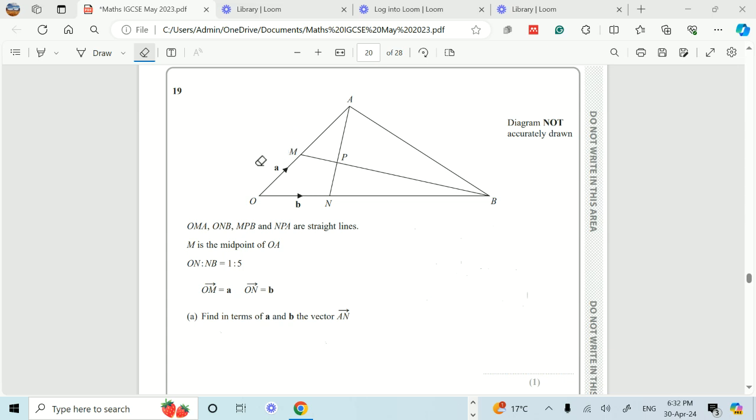OMA, ONB, MPB and NPI are straight lines. M is the midpoint of OA. ON to NB is equal to 1 to 5. If OM is equal to A, ON equals B, find in terms of A and B the vector AN.